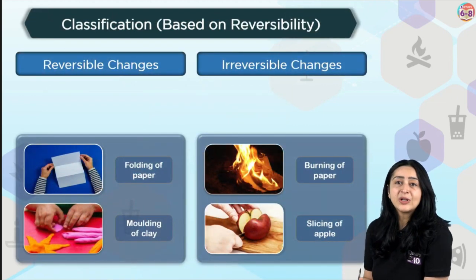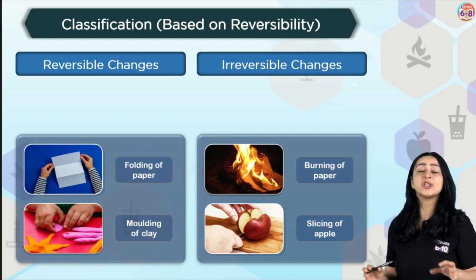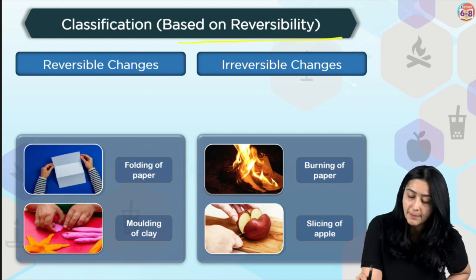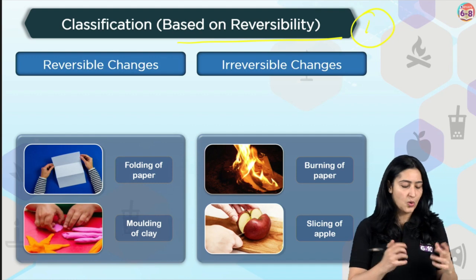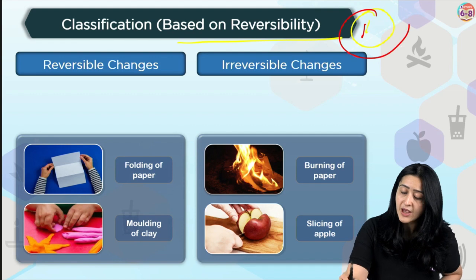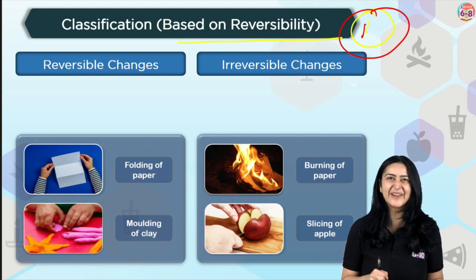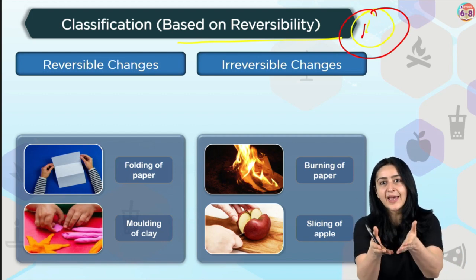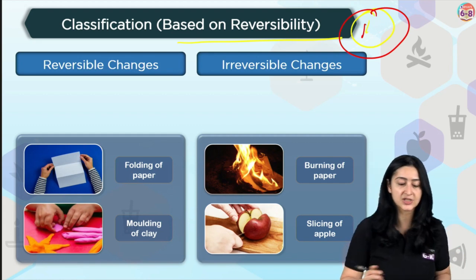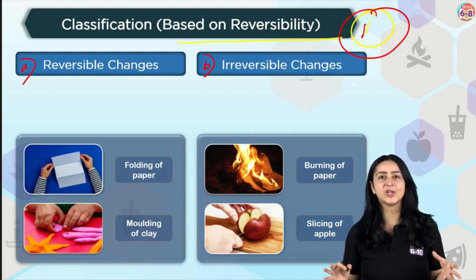Let's talk about classification of changes. Classification of changes can be done based on two factors. The first one is reversibility. Reversibility basically means something that can be reversed — you go somewhere and then you reverse back to what it was. Based on reversibility, we have two kinds of changes: reversible change and irreversible change.